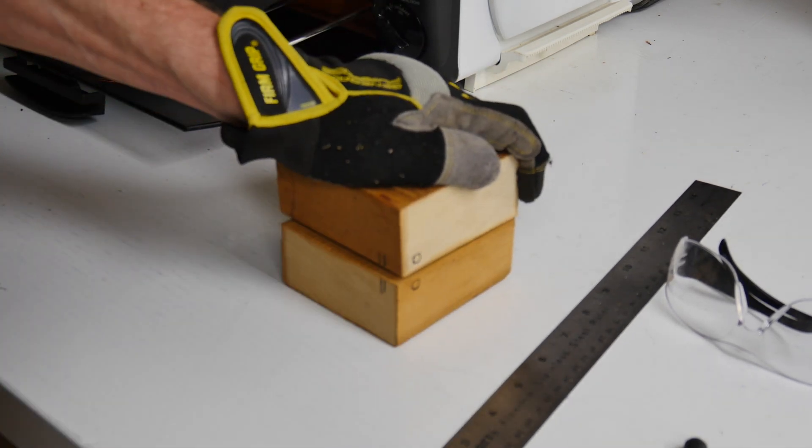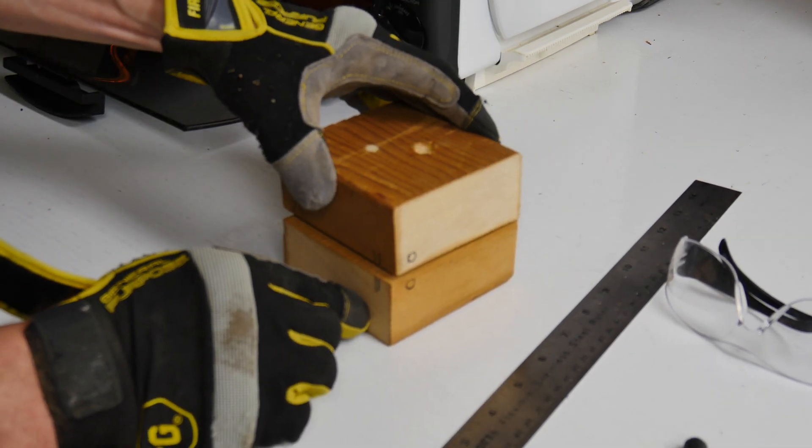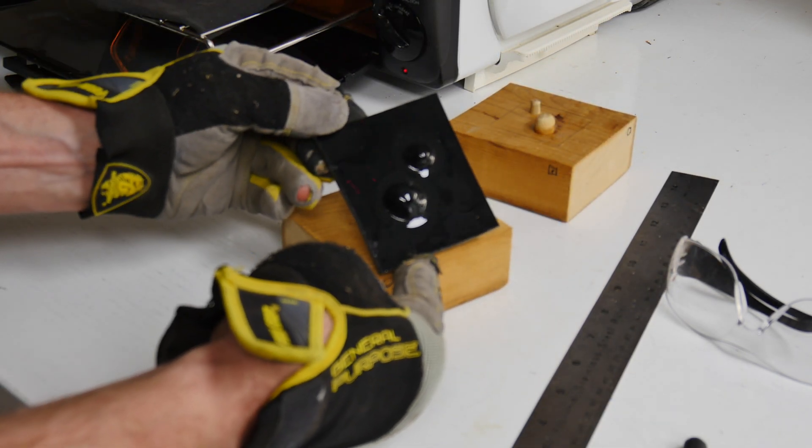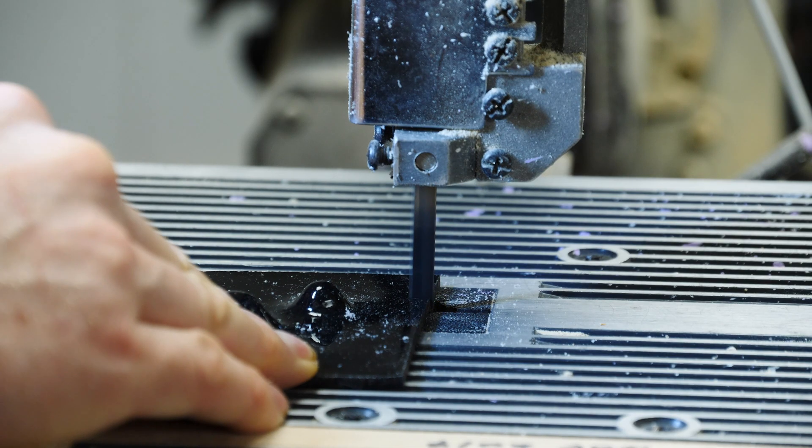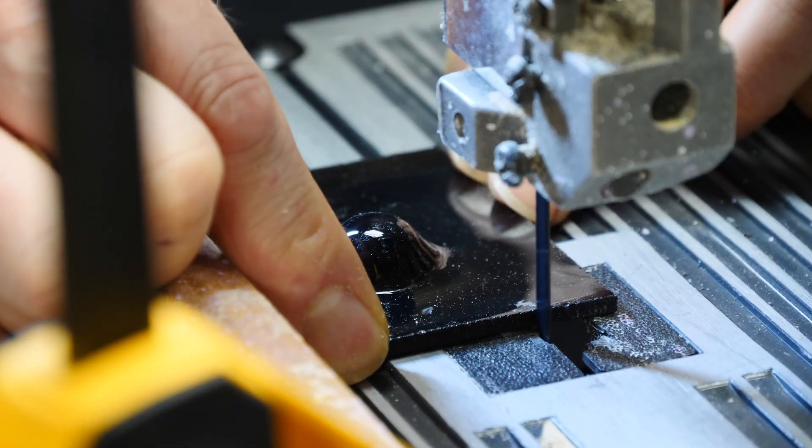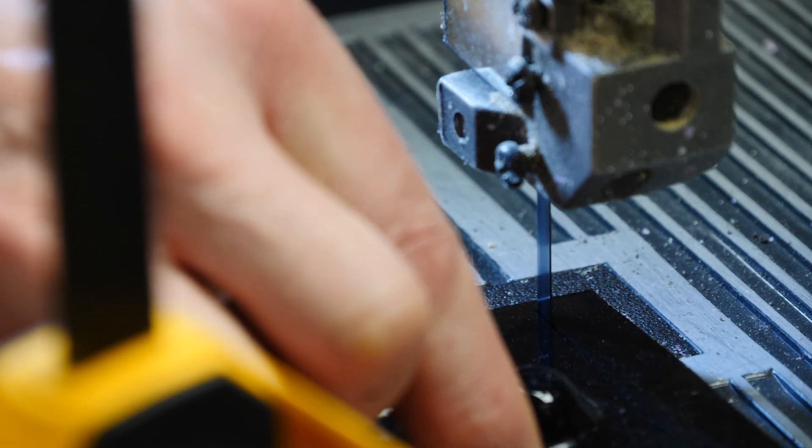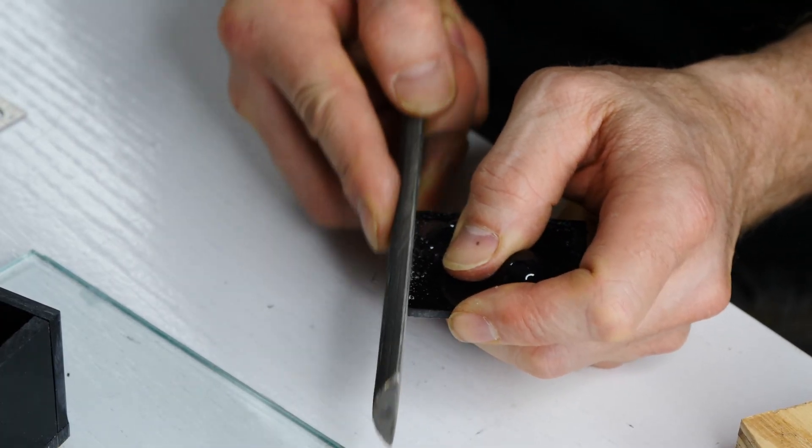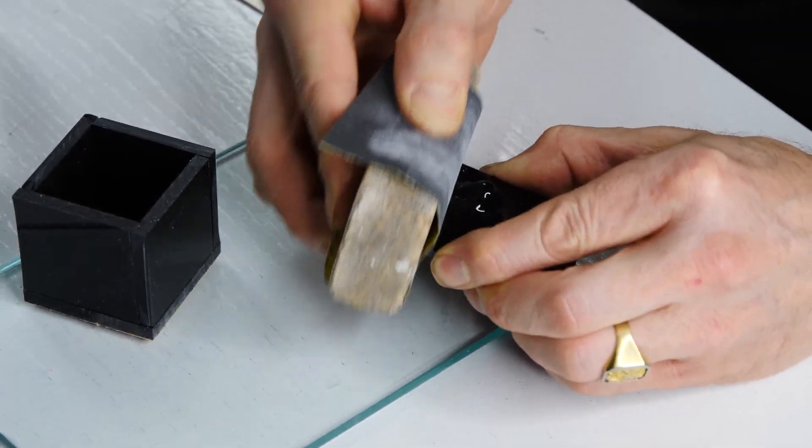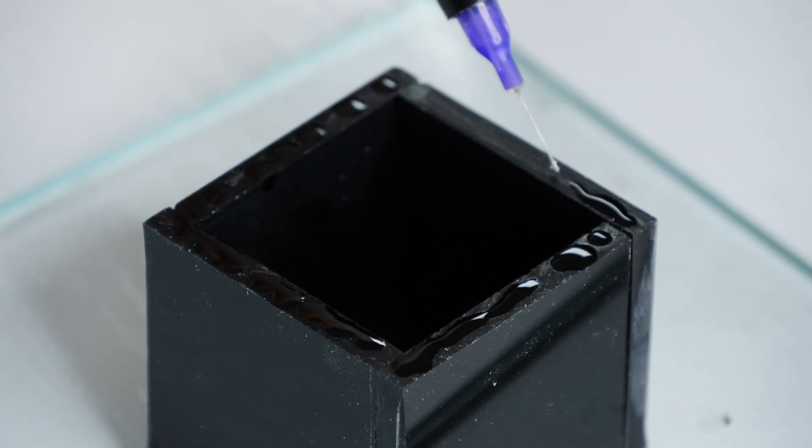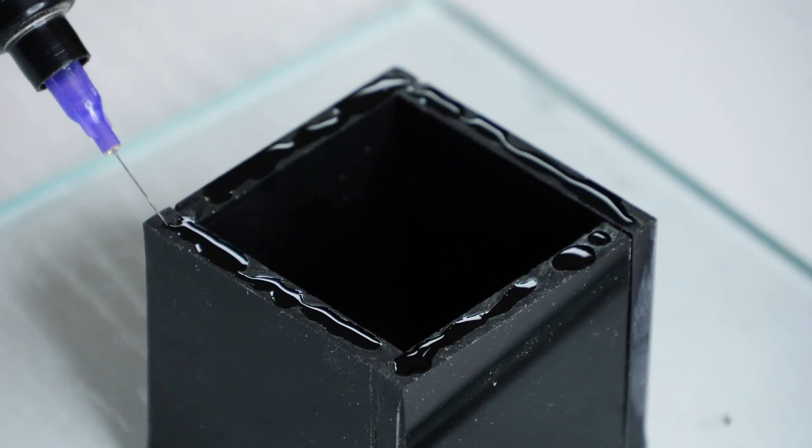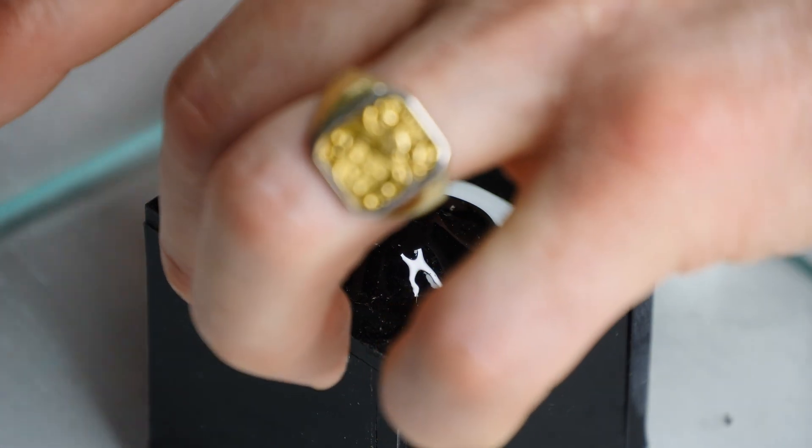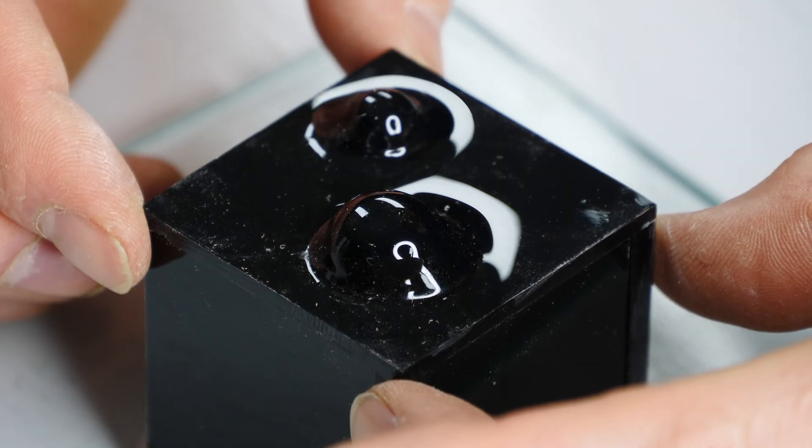Next, trim the part on the band saw so that it's square and the correct dimensions so that we can place it on top of our cube. Lastly, I will solvent weld the press form molded part onto the top of the black cube to finish it.